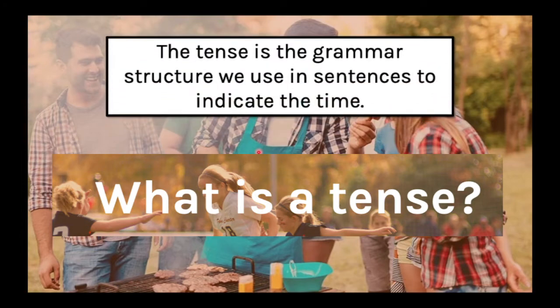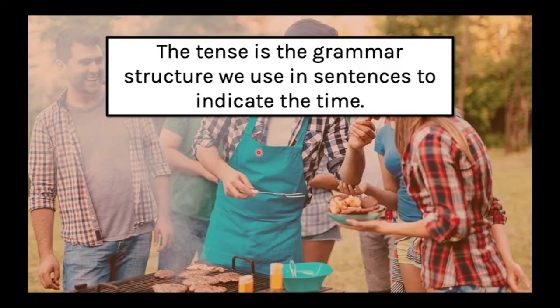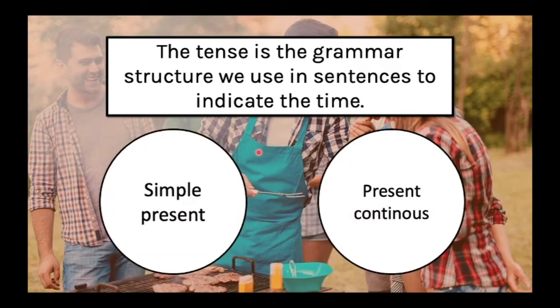What is a tense? A tense is a grammar structure we use in sentences to indicate the time. The tense is the structure that tells us when the action is happening in a sentence. In this case, we're going to study two different tenses: the simple present tense and the present continuous tense. But what is the difference between those two?